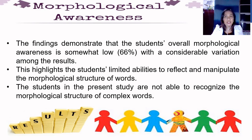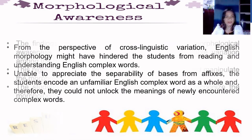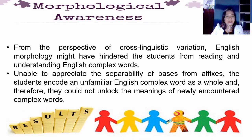The findings demonstrate that the students' overall morphological awareness is somewhat low at 66%, with considerable variation among results. This highlights the students' limited abilities to reflect on and manipulate the morphological structure of words. The students in the present study are not able to recognize the morphological structure of complex words. From the perspective of cross-linguistic variation, English morphology may have hindered the students from reading and understanding English complex words. Unable to appreciate the separability of bases from affixes, the students encode unfamiliar English complex words as a whole and therefore could not unlock the meanings of newly encountered complex words.